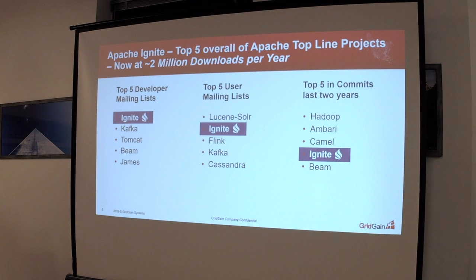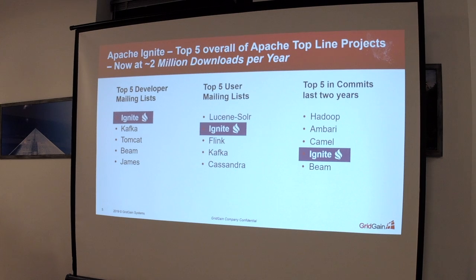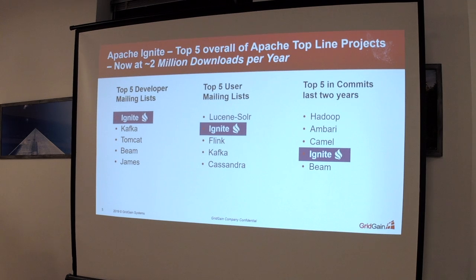We are an Apache project. We're one of the top five projects in the Apache ecosystem, out of something like 600 Apache projects. We're getting two million downloads last year alone for the Ignite project, and we're top five in activity. With that kind of activity, you can be sure this is an ongoing thing. When you're making a technology choice today, you've got to make sure it's going to be available tomorrow, the month after, and next year.